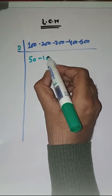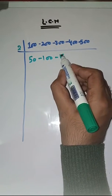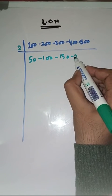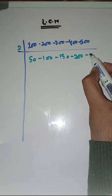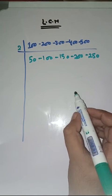2 times 50s are 100, 2 times 100s are 200, 2 times 150s are 300, 2 times 200s are 400, 2 times 250s are 500. Again with 2.